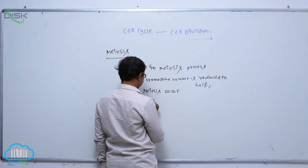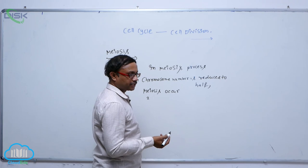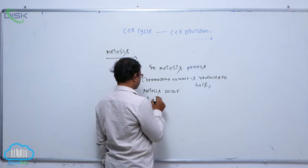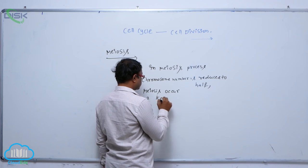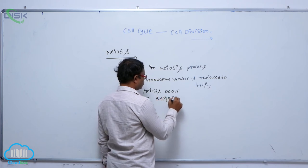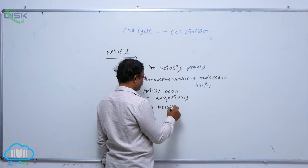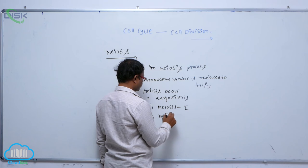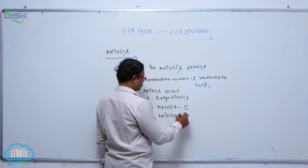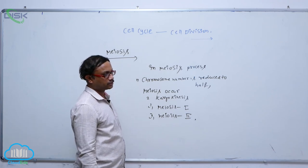Meiosis occurs in two phases, similar to karyokinesis and cytokinesis. There are two karyokinesis stages: the first is Meiosis 1, and the second is Meiosis 2.